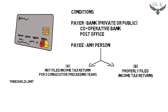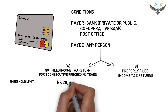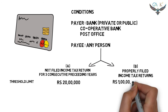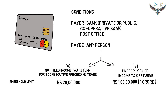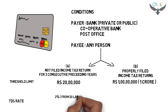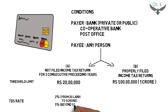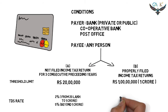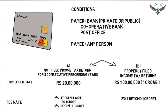The threshold limit is 20 lakh if the person has not filed a proper income tax return; on the other hand, it is 1 crore. Pay close attention here, as this is the favorite part for examiners to test. For the person who has not filed a proper return: no TDS up to 20 lakh; from 20 lakh to 1 crore, TDS rate is 2%; beyond 1 crore, the TDS rate is 5%. On the other hand, for the person who has filed properly: no TDS up to 1 crore; beyond 1 crore, the TDS rate is 2%.